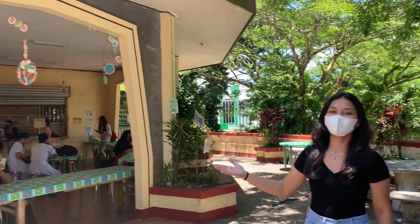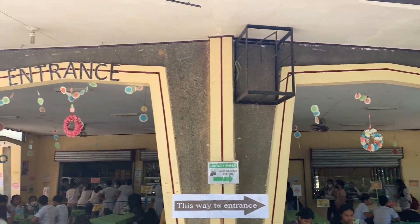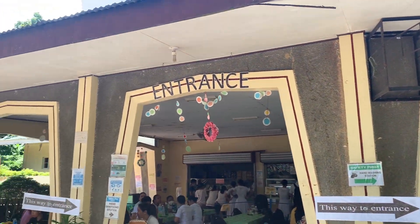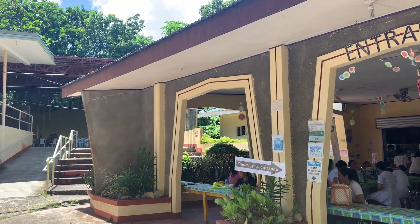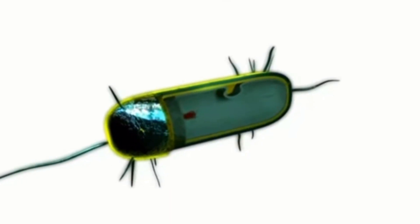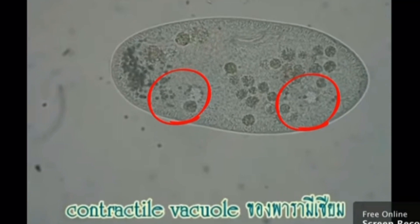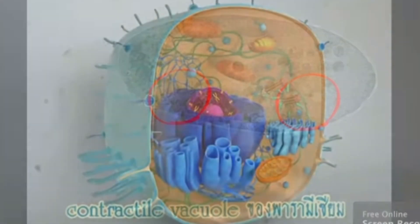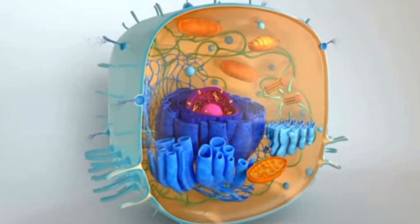The main function of vacuoles is to hold various substances and molecules. They basically act like the storage unit of the cell. There are some key vacuole functions, many of which relate to storing materials that the cell will need later on, or which can damage the cell and therefore need to be removed.